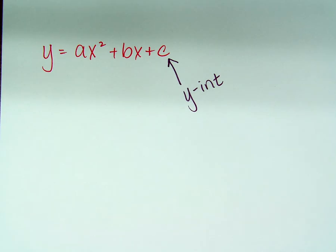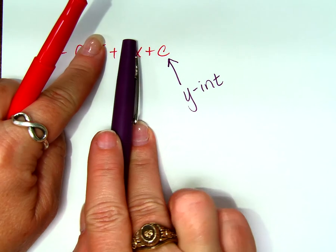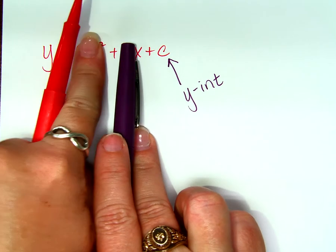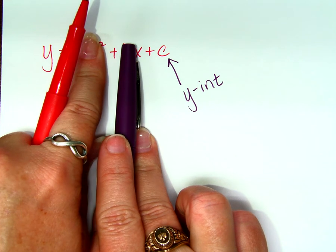If I let X equal 0, that will give us the y-intercept, right? Well, if that's 0 and that's 0, because 0 squared or 0 times something is 0, then the y-intercept is going to be what C is. Does that make sense?